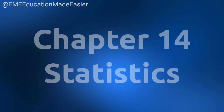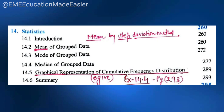In Statistics, chapter number 14, finding the mean of grouped data by the step deviation method is not coming. And in the same chapter, graphical representation of cumulative frequency distribution — also known as the Ogive — is also not coming. Related to this topic, exercise 14.4, page number 293, is not coming.